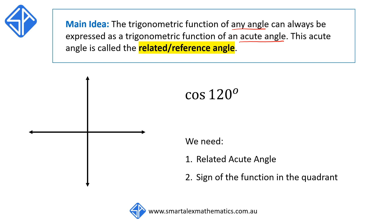First, let's identify where the angle 120 degrees corresponds to. Recall that 0 degrees is taken to be the positive x-axis. Rotation in the anticlockwise direction is taken to be positive. So the ray corresponding to 120 degrees is obtained by starting from 0 and rotating anticlockwise for 120 degrees. The related acute angle is the angle between the ray and the x-axis, which is 60 degrees — our related acute angle.